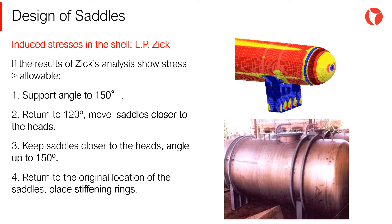If the results of the Zick analysis show that the stress level in the shell is higher than the allowable, good practices to solve this situation are the following: increase the support angle to 150 degrees; return to a 120-degree design and move the saddles closer to the heads, using the stiffness provided by the heads; keep the saddles closer to the heads and increase the angle of support up to 150 degrees; or return to the original location of the saddles and place stiffening rings in the plane of the saddles.